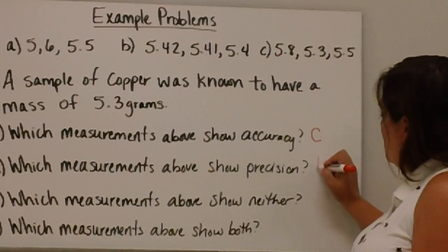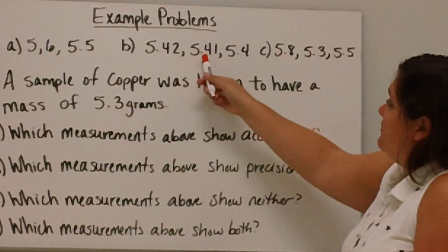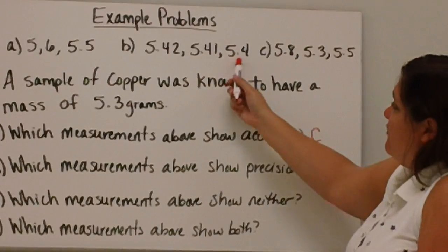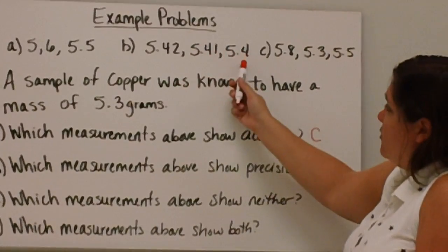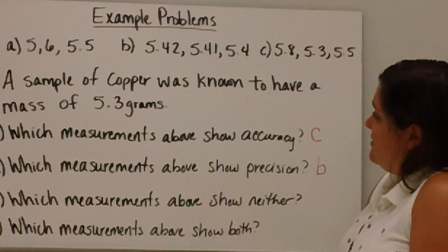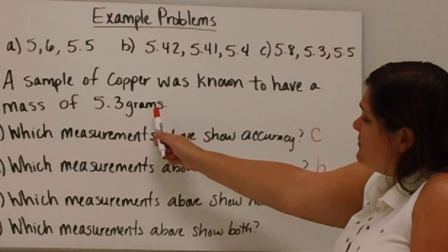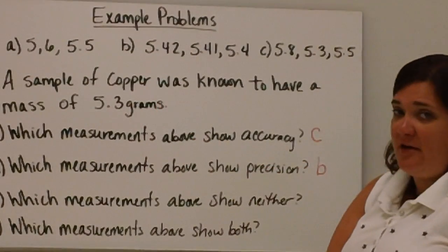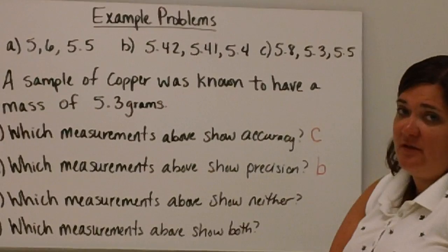That would be option B, because you have 5.42, 5.41, and 5.4. They are all 5.4, and then some have an extra digit. But they're not accurate because they're not close enough to the actual value.